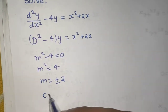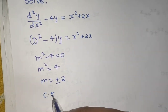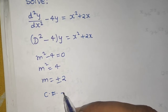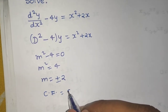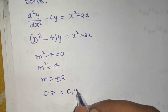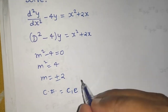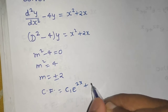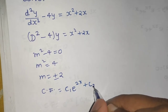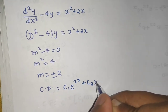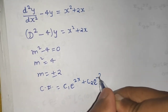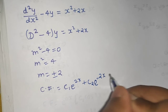Since the roots are real and distinct, we can easily write the complementary function as c₁e^(2x) plus c₂e^(−2x).